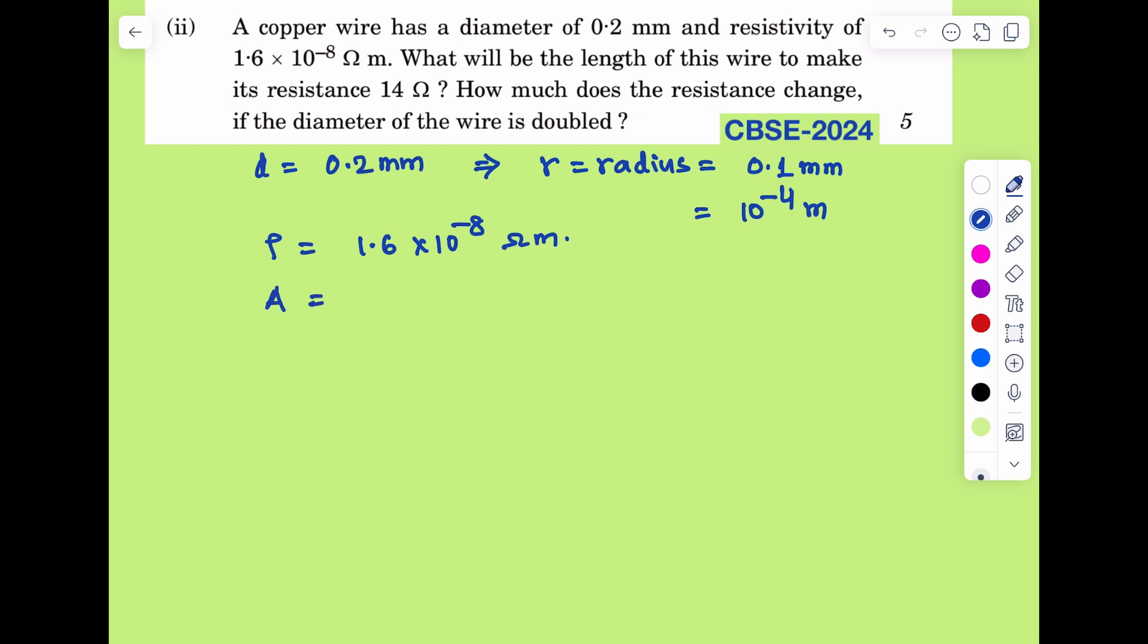From the given radius we will get A is equal to pi into r square, which is equal to 22 by 7 into 10 to the power minus 8 meter square.